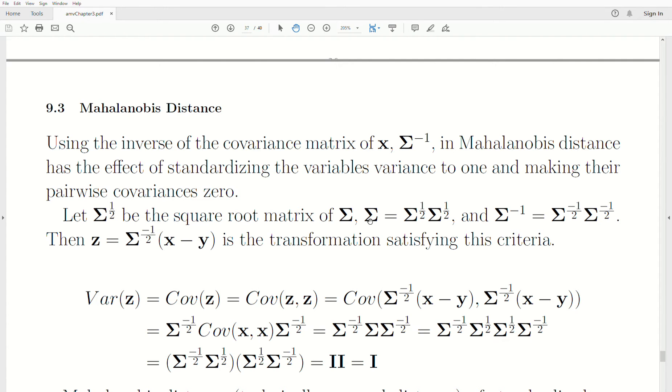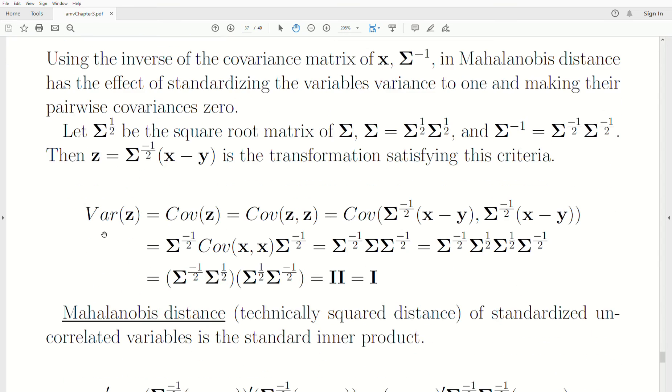Also, the inverse of this Σ can be thought of as a product of the inverse of the square root matrix. Now, if we let z be this transformation, it satisfies this requirement of standardizing the variables to have a variance of one and making the pairwise covariances equal to zero. So this is the inverse of the square root matrix of the covariance matrix times the vector x minus y. And let's look at that.